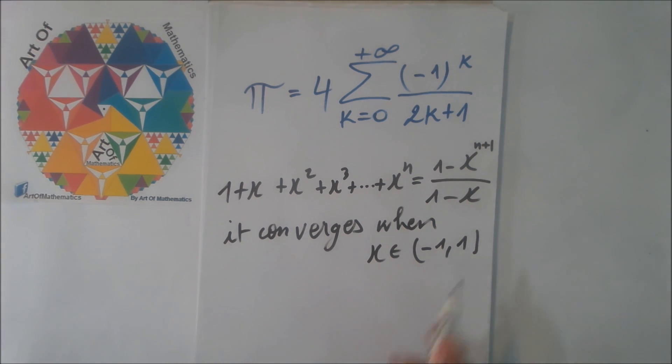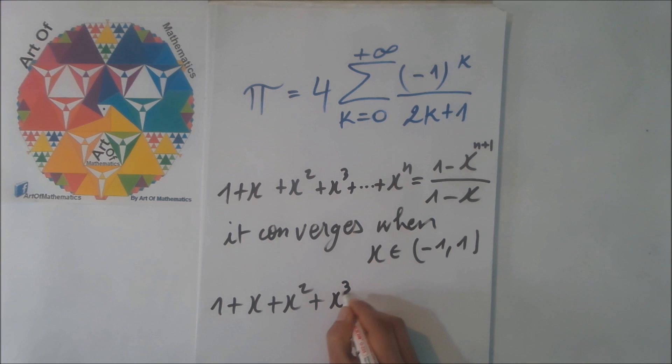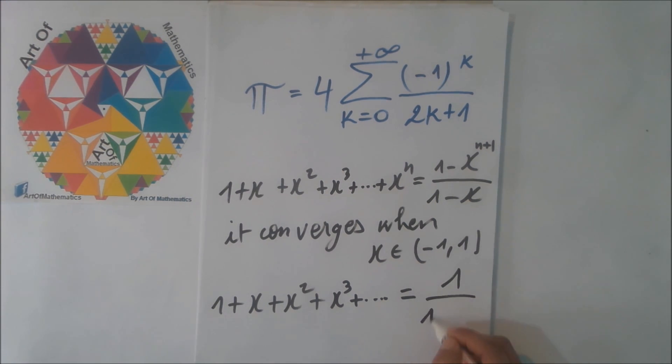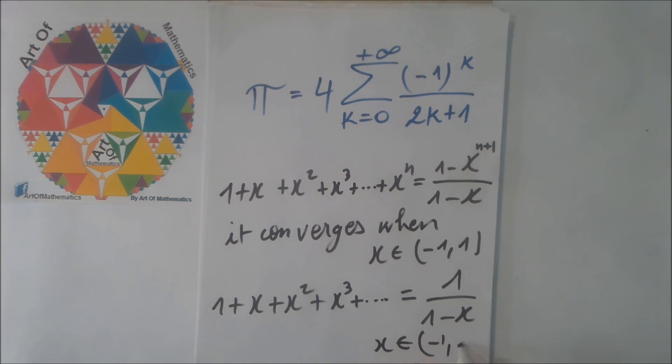When n tends to infinity, we get this infinite sum, which is equal to 1 plus x plus x squared plus x to the power 3, and so on, which equals 1 divided by 1 minus x. And this is good when x belongs to the interval minus 1 to 1.